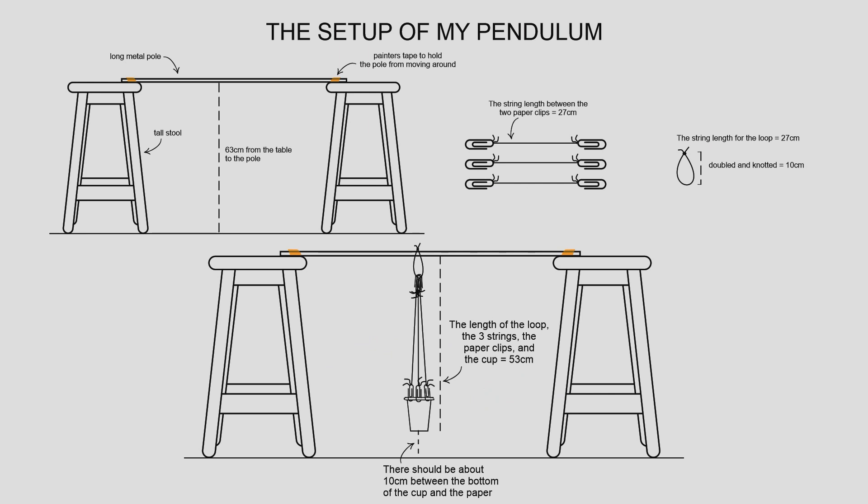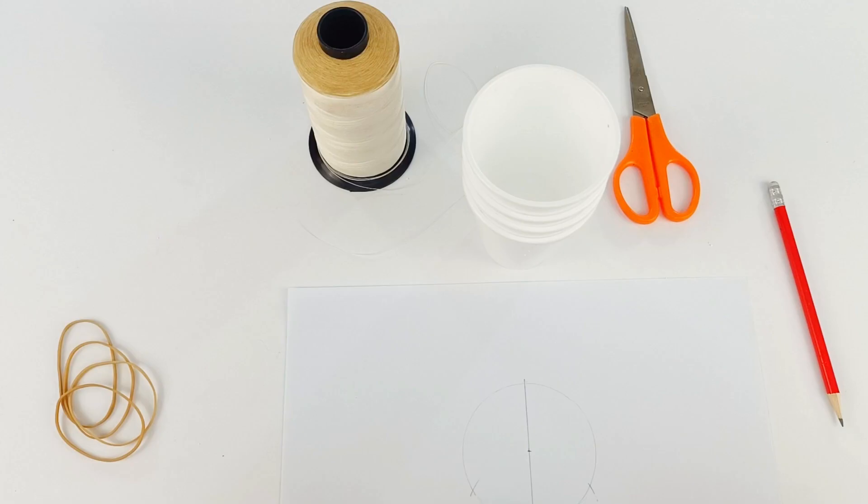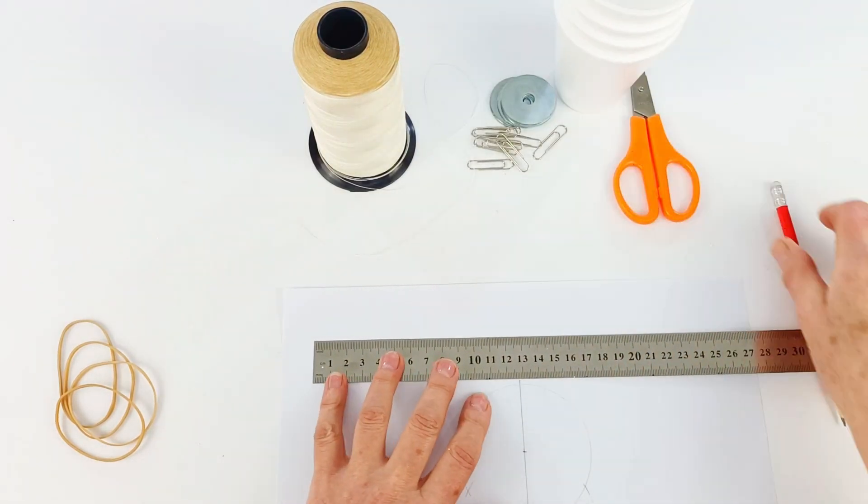So this is our setup for our pendulum. You're going to want to use stools or whatever you have available to set a bar across and then tape the bar in place so it doesn't move. The most important thing here is you want about 10 centimeters from the bottom of your cup to the paper. So adjust any measurements that we do to ensure that you keep about that distance of 10 centimeters.